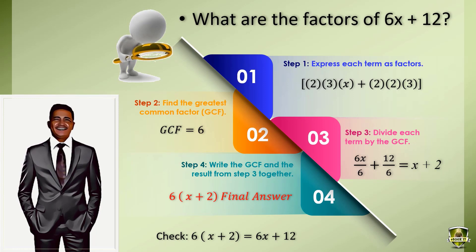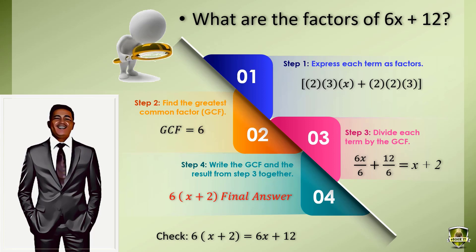Now let's start with our exercises. First problem: what are the factors of 6x plus 12? Step 1, express each term as factors: 2 times 3 times x, plus 2 times 2 times 3. Step 2, find the greatest common factor: we have two prime factors common to each term, 2 and 3, so multiplying them gives us 6 — our GCF is 6. Step 3, divide each term by the GCF: 6x divided by 6 plus 12 divided by 6, which gives us x plus 2. Lastly, combine the GCF and the result: 6 times the quantity x plus 2. That is our final answer and the factored form of 6x plus 12.